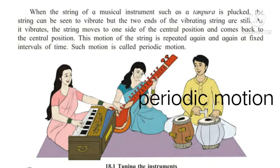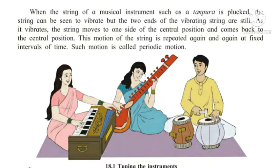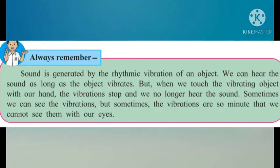What is periodic motion? The repeated motion, that is called periodic motion. Always remember, sound is generated by the rhythmic vibration of an object.